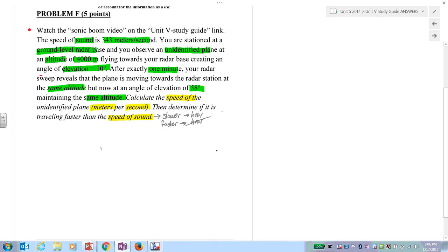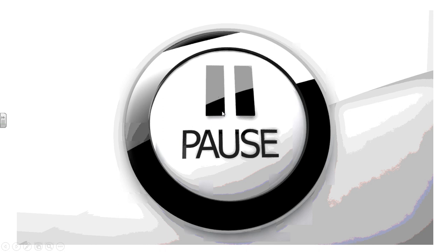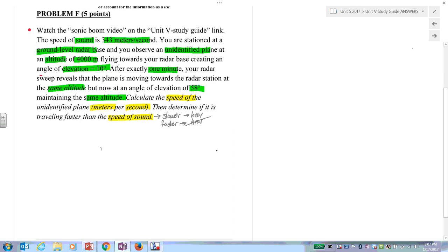That's filtering. Now step three: draw a diagram, label your diagram, list your given information, and cross it out as you go. Do the drawing on your own, then check.